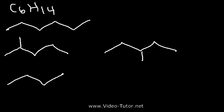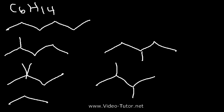Now let's go down to four carbons. We can put two methyl groups on carbon 2, or we can put one on carbon 2 and the other on carbon 3. We can't go down to three carbons because we'd need to add three more carbons to one carbon, and a carbon can't form five bonds. So there are five constitutional isomers for hexane.